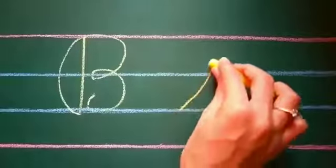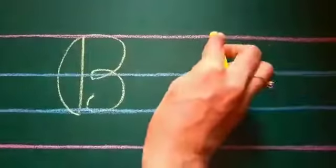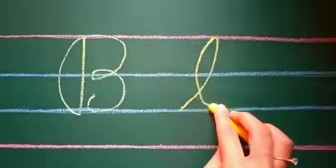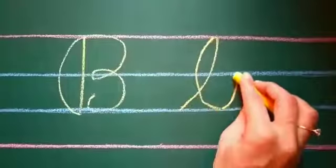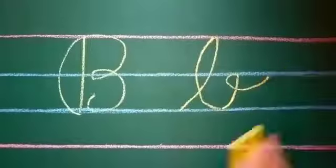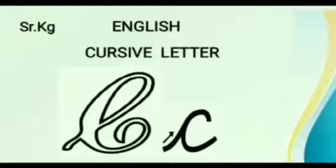Making a slanting line go up, come down making a big loop, making a curve go up, make a small loop and a tail coming outwards. Cursive letter C.